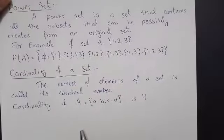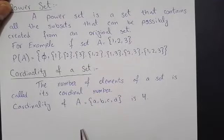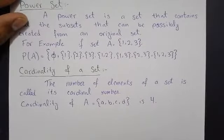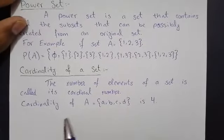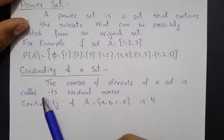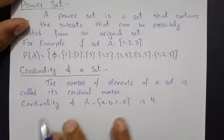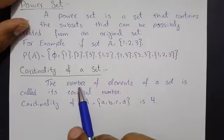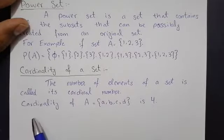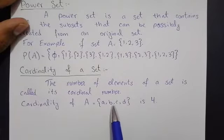Next definition is Cardinality of a set. Cardinality of a set means the number of elements in a set is called the cardinal number. جتنے numbers کی تعداد ہے elements کی، وہ اس کا cardinal number ہوتا ہے۔ مثال کے طور پر: Cardinality of A is equal to — A, B, C, D.